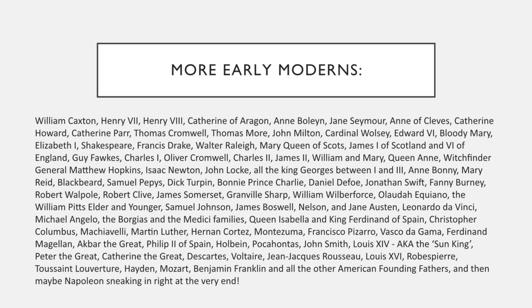Hopefully you've just realised that you already have some knowledge of early modern history, even if you didn't recognise every single one of those names. That exercise has also quickly put you in mind of some of the various themes that shape historical study in this period. You are unlikely to have read Columbus without thinking of sea voyages and the colonisation of the New World. Likewise, Martin Luther and Henry VIII probably put you in mind of the Protestant Reformation. And if you read Louis XVI and Robespierre without thinking of the French Revolution, it's quite possible that you're sat listening to the wrong lecture.